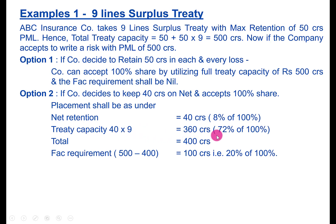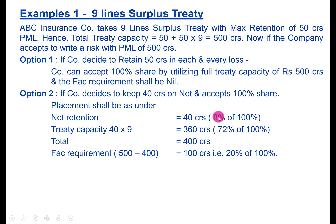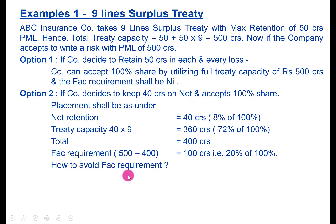The reduced treaty capacity shall be 360 crores, which is 72 percent. Total placement is 400 crores (360 plus 40), so the balance is 100 crores, which is 20 percent of 500. That means 72 plus 8 equals 80 percent is placed under the treaty, so the remaining 20 percent is your FACA requirement.